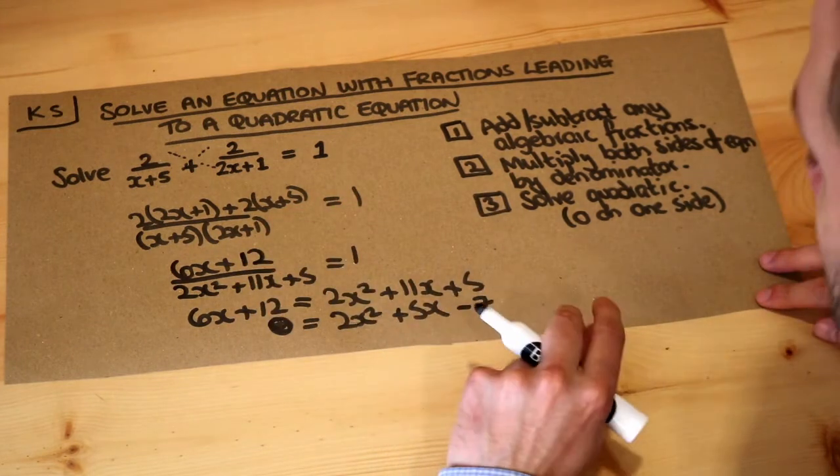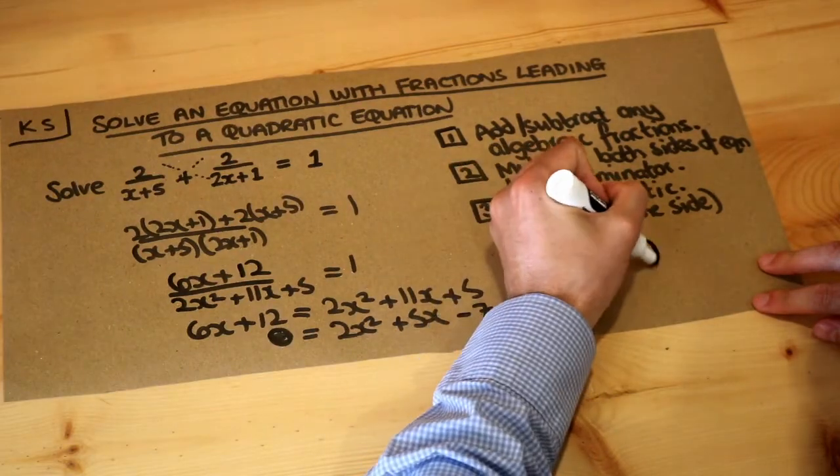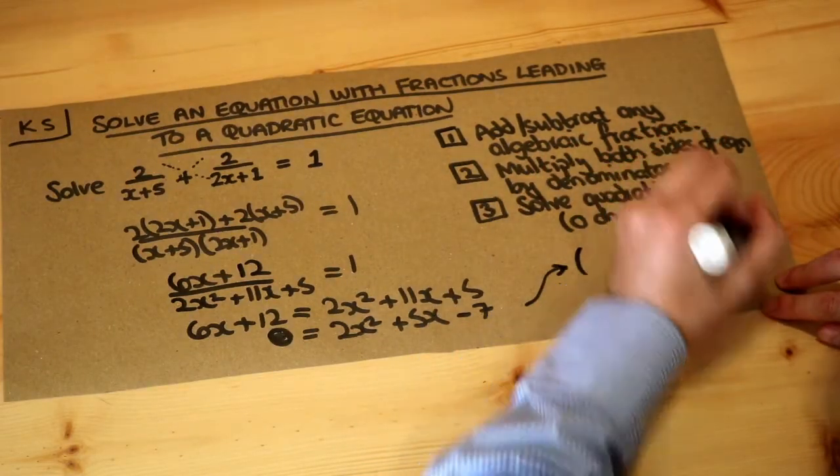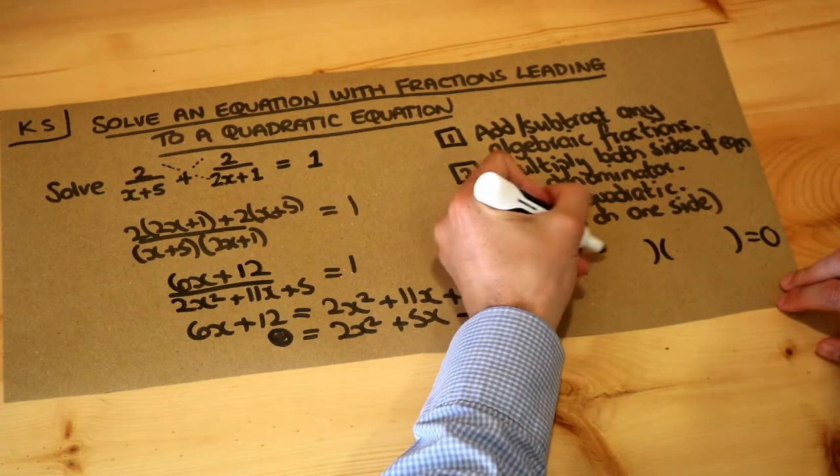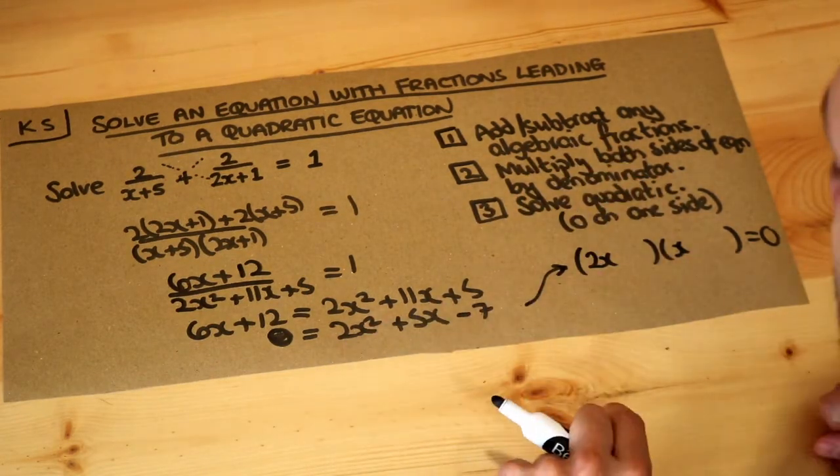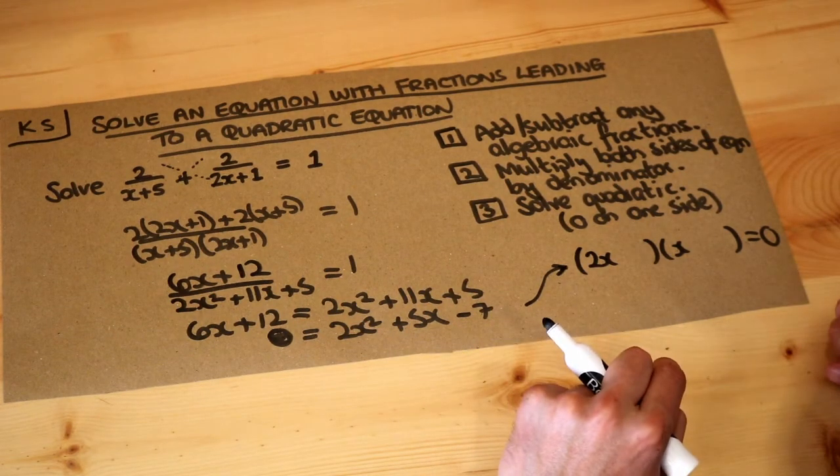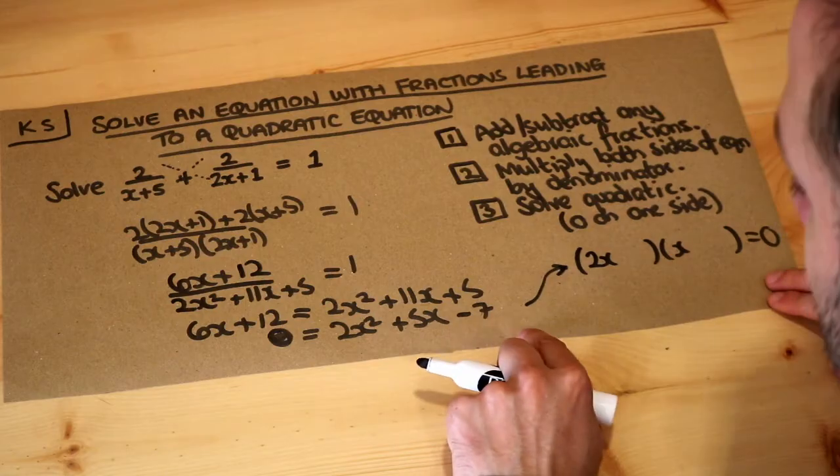You could split the middle term—that's the method that I usually prescribe—but I'm just going to intelligently guess the two brackets. Because to get the 2x², it's going to be 2x and x. That would multiply out to give the 2x². And to get the -7, well, because 7 is prime, it's going to be 7 and 1, and one of them is going to be negative.